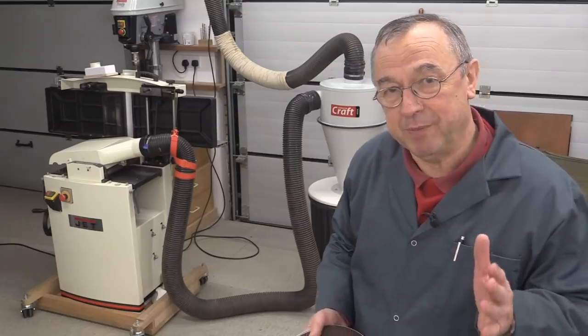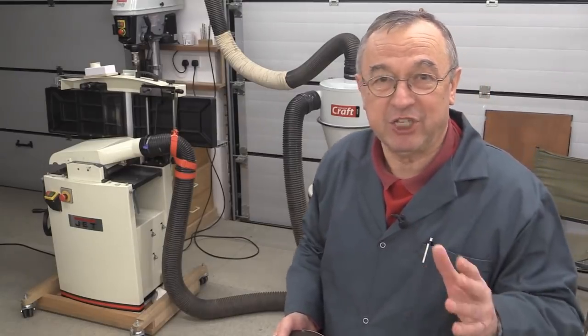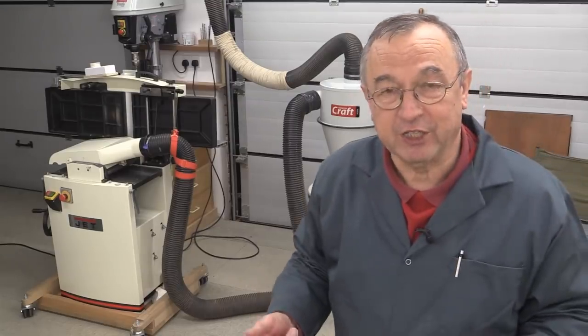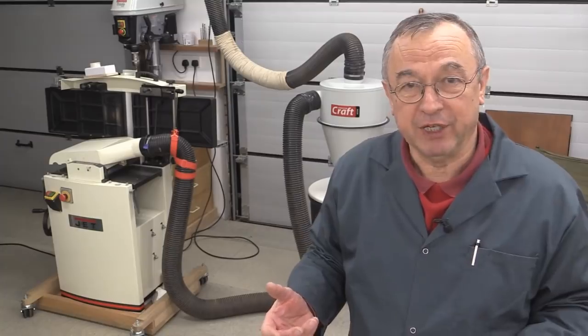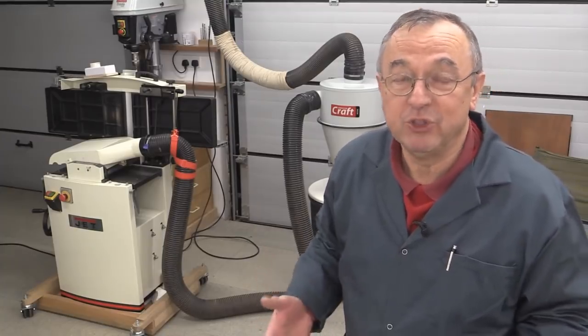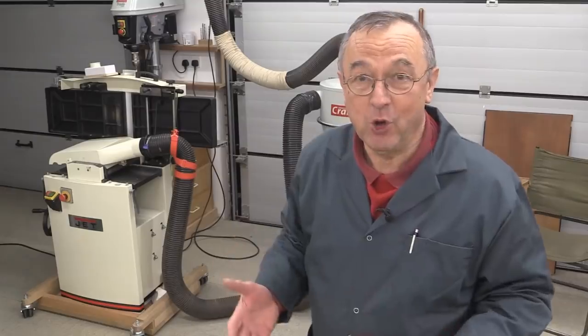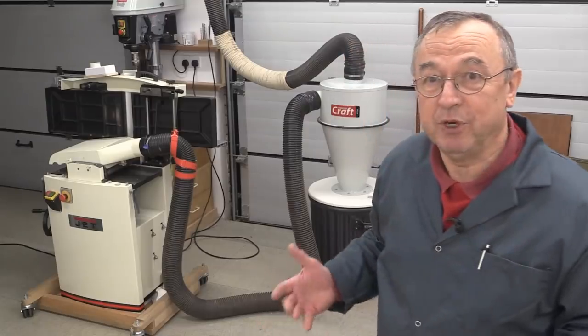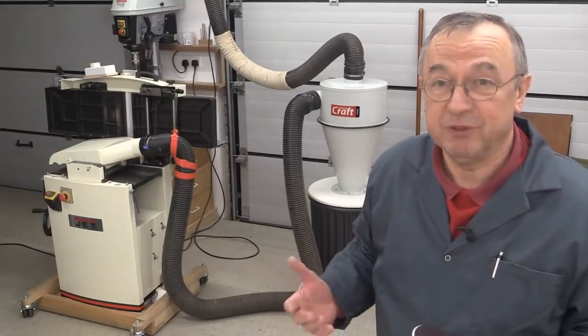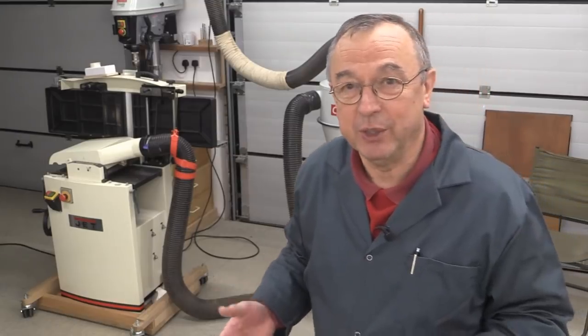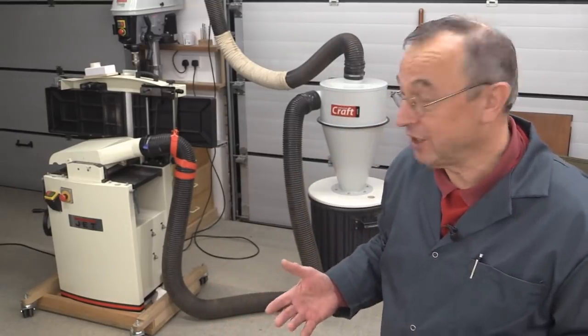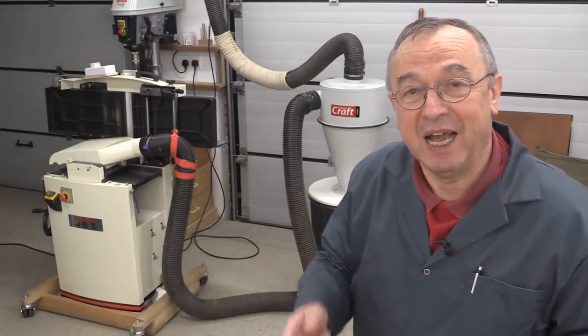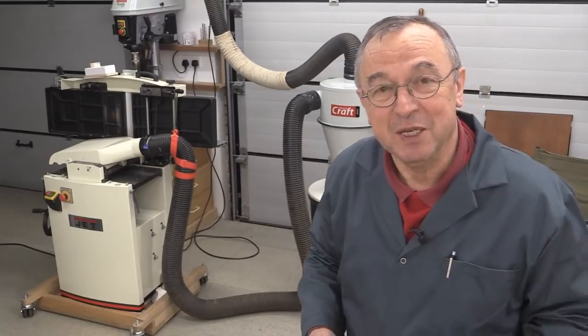But the key thing to remember is that I challenged Axminster to come up with a solution that would provide a four-inch cyclone on the UK market well within the budget of most DIY and home woodworkers. And this is it. And on top of that, this is a cyclone which would work perfectly well in a small professional workshop. And as far as I know, this is the least expensive four-inch cyclone on the UK market today. And what's more, it's made of steel and it's powder coated.